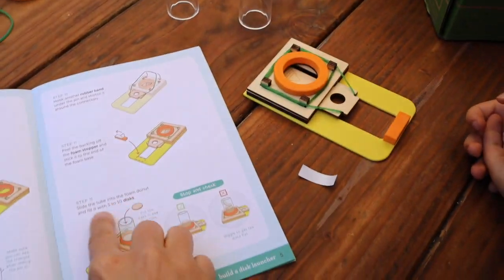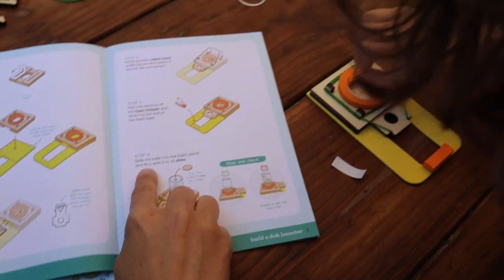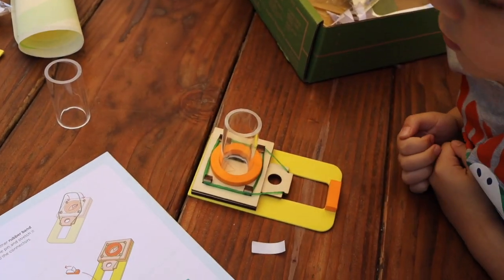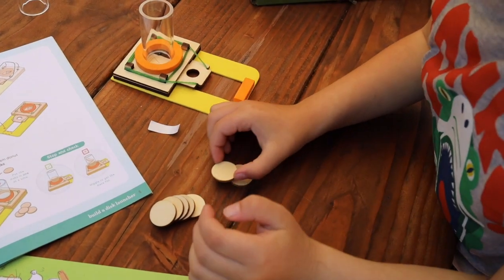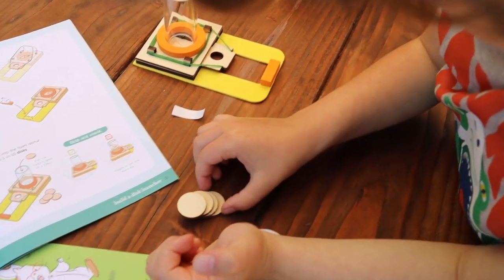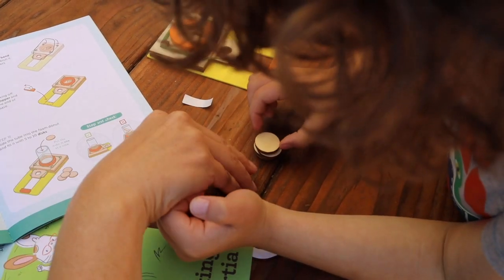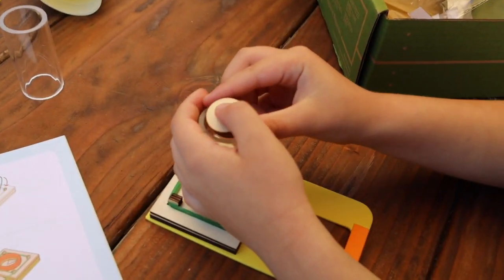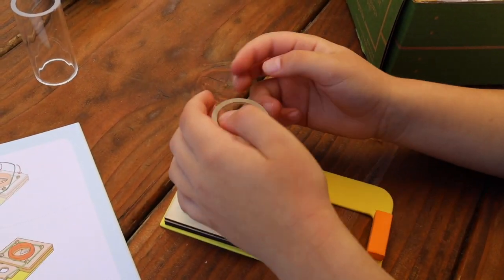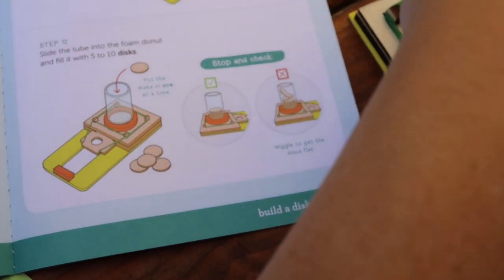We'll need one of these. Peel the backing off the foam stopper and stick it to the end of the foam base. You got it. I saw the picture, so that's going to go right here. Press down. Excellent. Now slide the tube into the foam donut. We are a machine. Slide this tube into the foam donut. And fill it with five to ten discs. One, one, two, three, four, five. We'll start with five. Now fill the tube. Look at the picture now. Does it look like this? It has to be flat. They have to be flat. So you have to always make sure that they're nice and flat. They can't be like this.